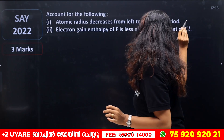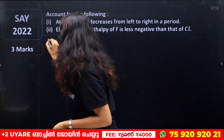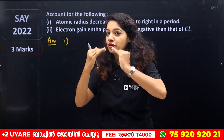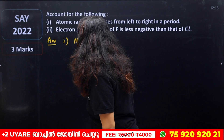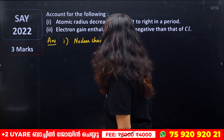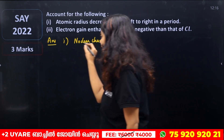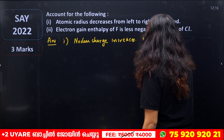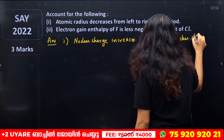Atomic radius decreases from left to right in a period. Our points are: nuclear charge increases, effective nuclear charge increases.